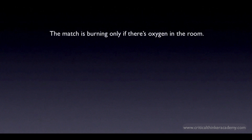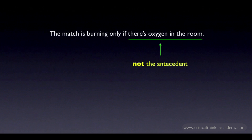Given what we did in the last tutorial, it's tempting to just look for the if and apply the rule — whatever comes after the if is the antecedent — and conclude that 'there's oxygen in the room' is the antecedent. But that's wrong. This isn't the antecedent. If this were the antecedent, then the sentence would be saying that if there's oxygen in the room, then the match will be burning.